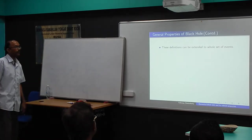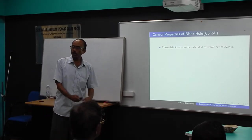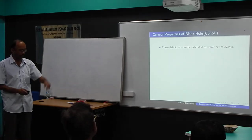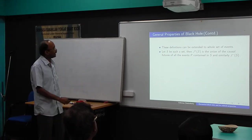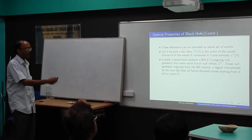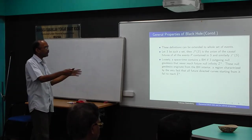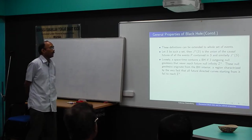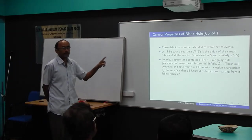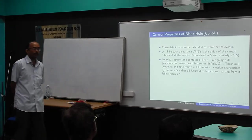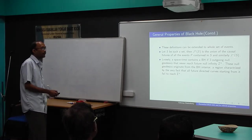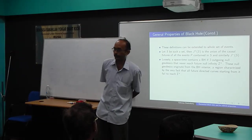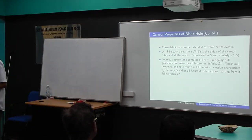A black hole can be defined loosely as a spacetime region. Why do we say spacetime region? If there exists an outgoing null geodesic that never reaches future null infinity, we say there is a black hole. This definition is equivalent to the previous one: if I have a region from which no causal curve — no time-like or null curve — can ever reach future null infinity, then no signal from inside can reach infinity.